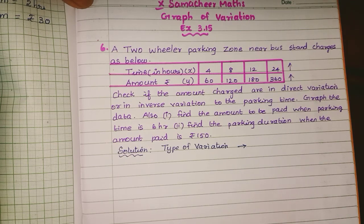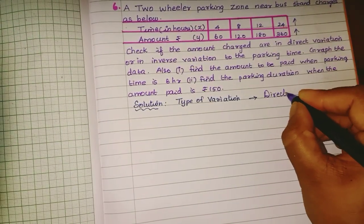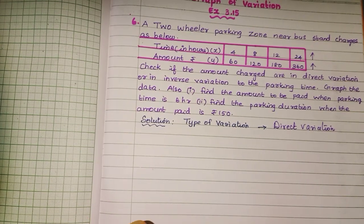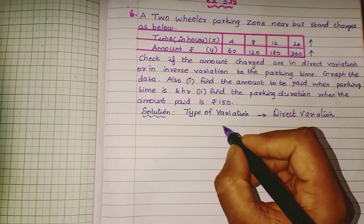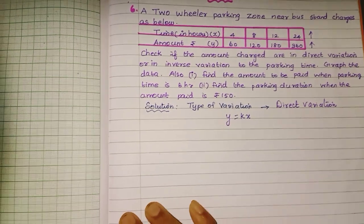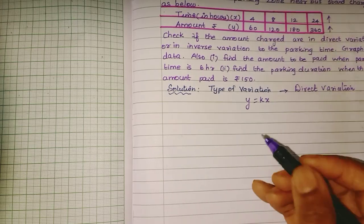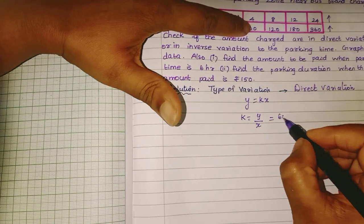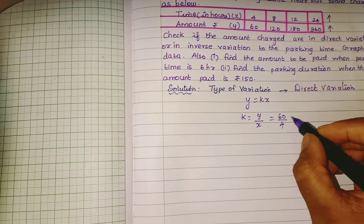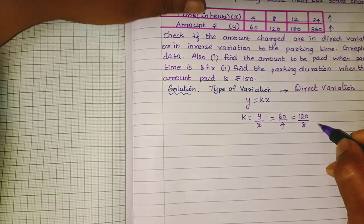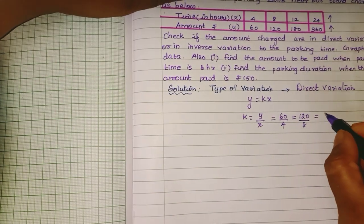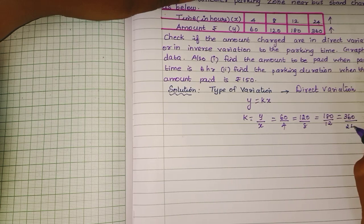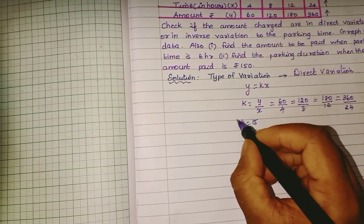To check the type of variation, use Y = KX, so K = Y divided by X. So 60 divided by 4 is 15. Same as 120 divided by 8, that is 15. Next, 60 divided by 10 is 15. Next, 360 divided by 24, that is 15. So K is equal to 15. This is the constant of variation.